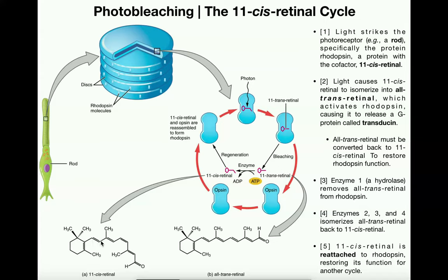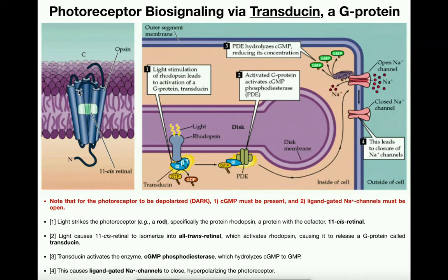Notice that this chain of carbons actually has a bend in it — it bends right here. That's important. 11-cis-retinal is the cofactor for opsin. When you put 11-cis-retinal with opsin to make a complete protein, we call it rhodopsin. Rhodopsin is typically the term you'll hear when it's in a rod and when 11-cis-retinal is joined with opsin.